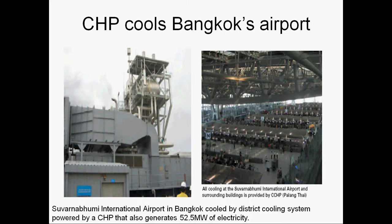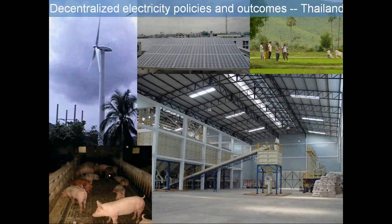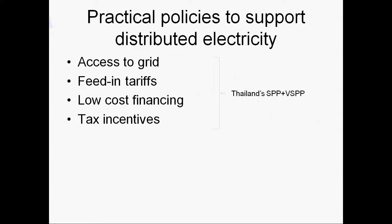While Thailand is continuing to steam ahead with centralized energy, they've also put in place some nice policies supportive of decentralized energy. Collectively, these have had substantial results in increasing deployment of renewable energy and cogeneration. It helps that Thailand has rich renewable energy resources, particularly biomass residues from agricultural industry. Some practical policies that support decentralized grid-connected electricity generation include access to the grid, feed-in tariffs, low-cost financing, and tax incentives.